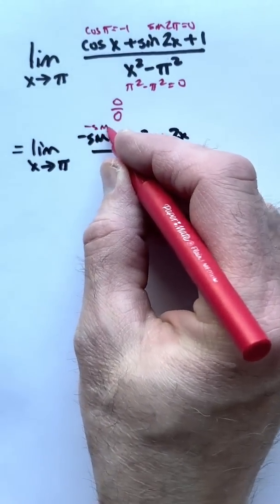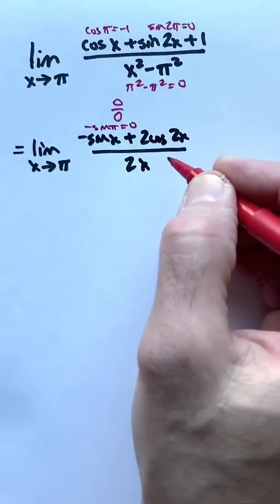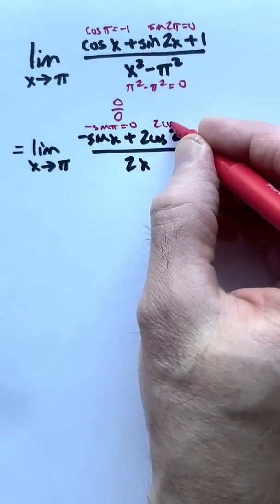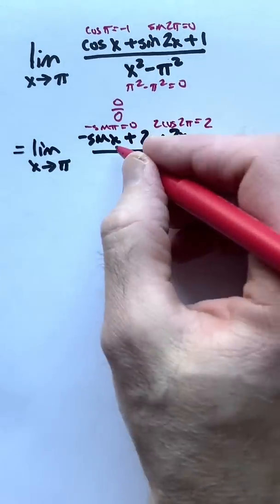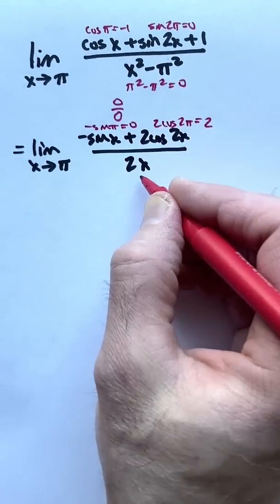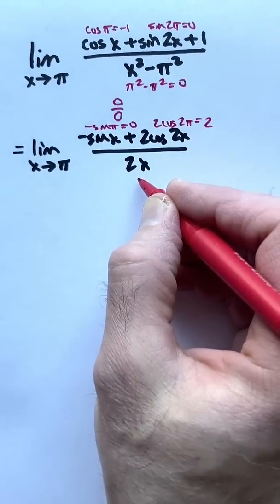You get negative sine of pi, which is 0, and 2 cosine of 2 pi, which is 2, not 0. 0 plus 2 is 2, and when we plug in pi in the bottom, we get 2 pi, also not 0.